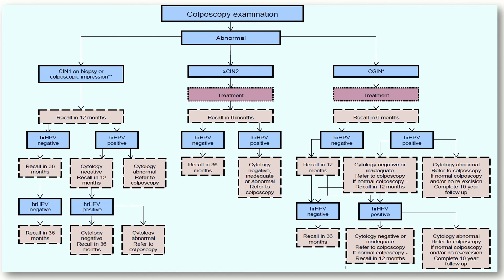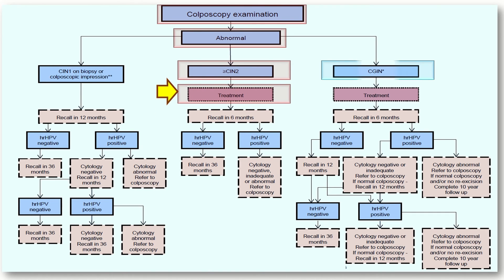If colposcopic examination detects abnormality such as CIN2 or more, treatment is performed in the form of large loop excision of the transformation zone. Similarly, if the abnormality is cervical glandular intraepithelial neoplasia, treatment is also by large loop excision. In both cases, the patient is recalled at six months for HPV testing and management according to the algorithm. For detailed study of the NHS cervical screening program, see the link in the top right corner of this video.